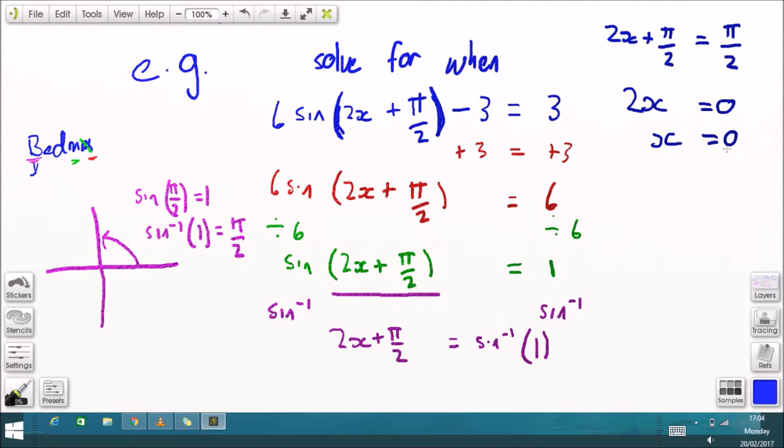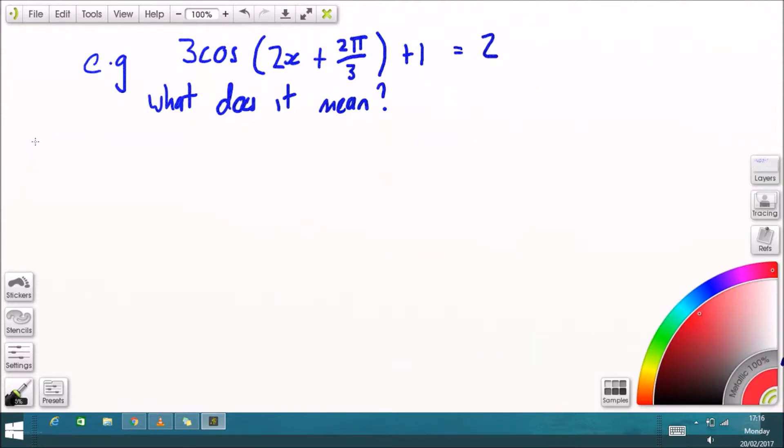So when is 6 sine of all that stuff minus 3 equal to 3? When x is equal to 0. Right, that was just an example. What does it actually mean though?